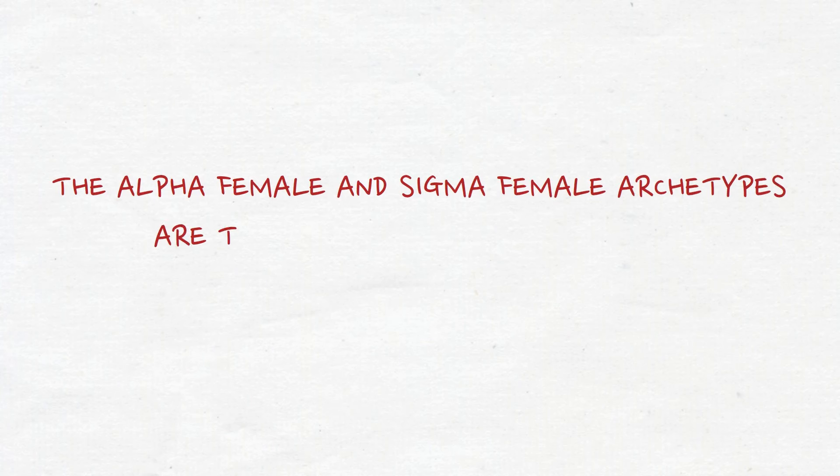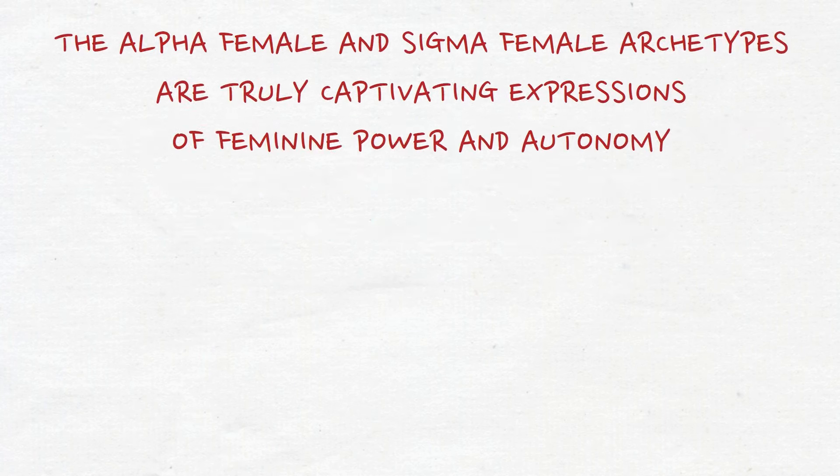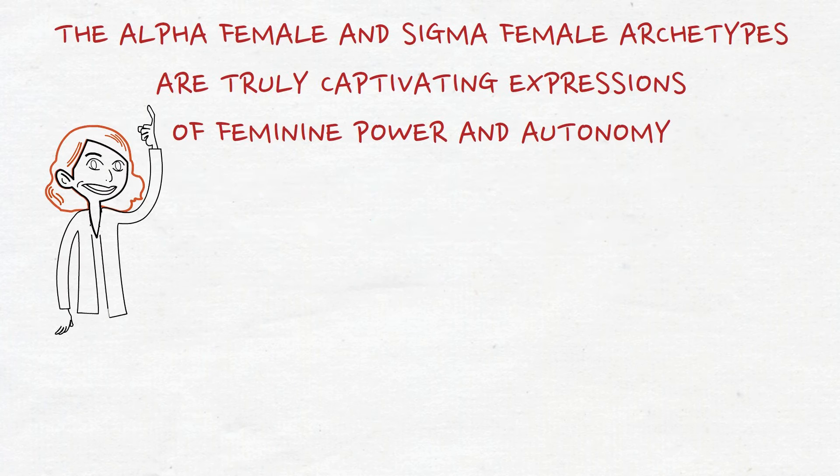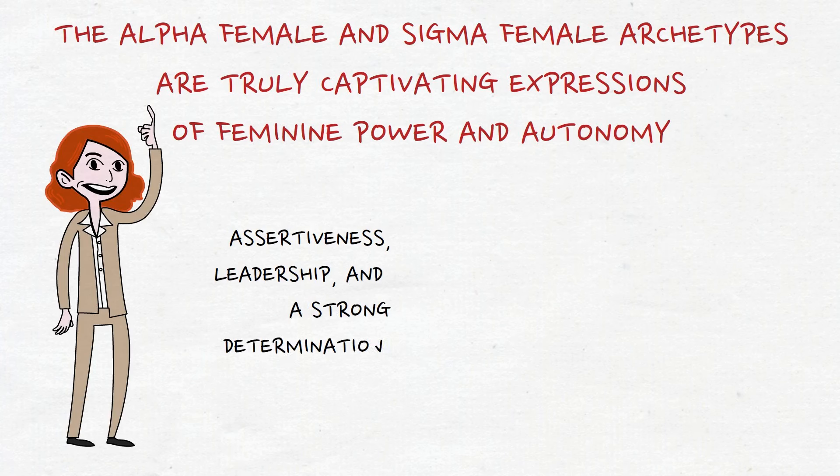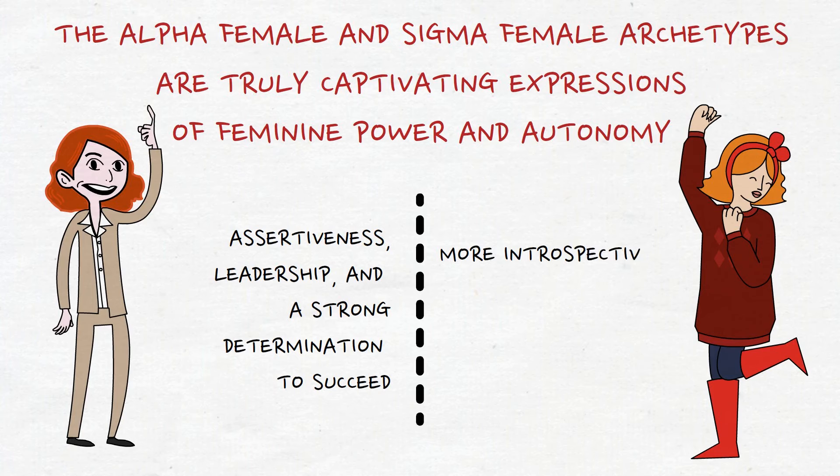The Alpha Female and Sigma Female archetypes are truly captivating expressions of feminine power and autonomy. The Alpha Female is commonly linked to qualities such as assertiveness, leadership, and a strong determination to succeed. However, the Sigma Female, although just as independent, tends to be more introspective and highly values her autonomy and freedom.